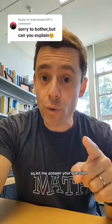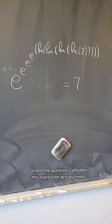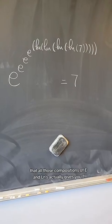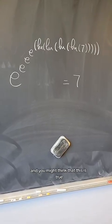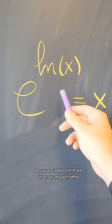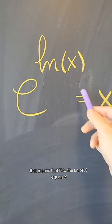So let me answer your question. Here the question is whether this expression actually holds, that all those compositions of e and ln's actually gives you 7. You might think that this is true because e and ln of x are inverses of each other. That means that e to the ln of x equals x.